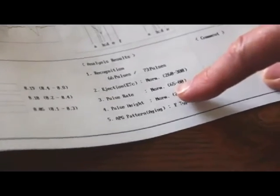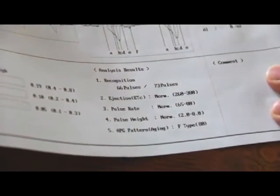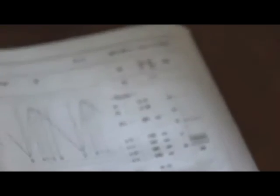The next thing that we look at is the pulse rate. As shown here, anything between 65 and 80 is considered normal. And her being 75 when it printed out, that's well within the normal range.